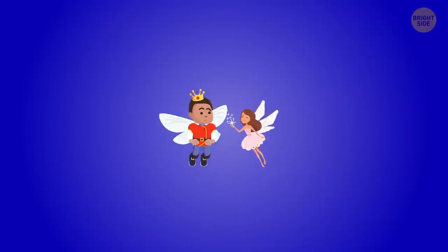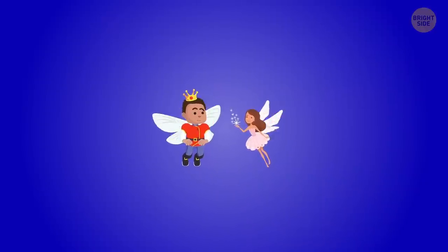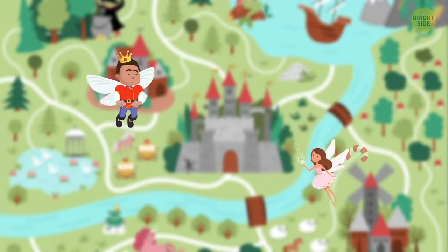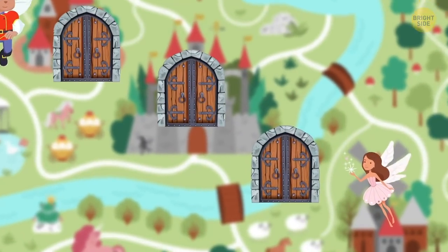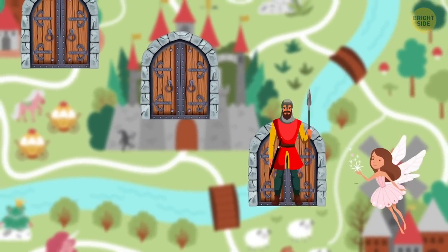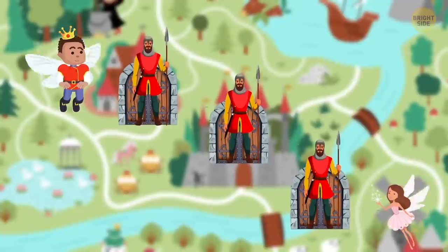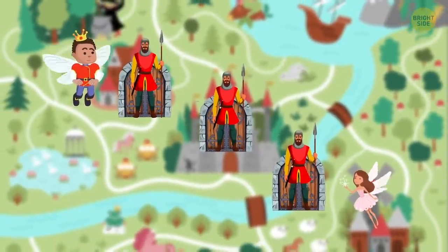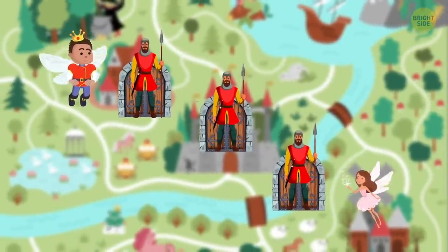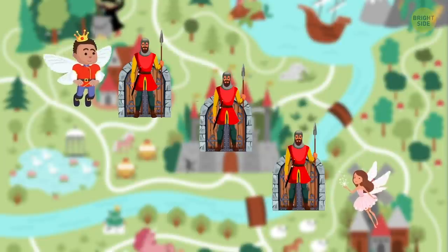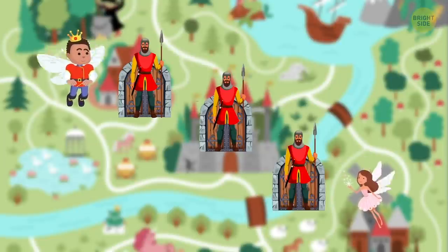Well, it's the fairy's grandpa's birthday today. She wants to visit him and bring him birthday candy canes. Her grandpa lives in a different town, and there are three gates to cross on the way. At every gate, there is a guard. To cross, the fairy has to pay a fee of half of the candy cane she has. But she gets one candy cane back. What's the minimum number of candy canes the fairy should take from home to make sure she arrives at her grandpa's with two candy canes for him?